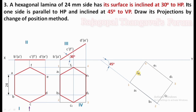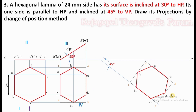Finally, F1 is at the midpoint of side 1 and 4. Now join all these points: A1, B1, C1, D1, E1, F1. The same hexagon is reproduced, with the side A1-B1 inclined at 45 degrees to VP as per the condition of the question. This is the final shape of step five.